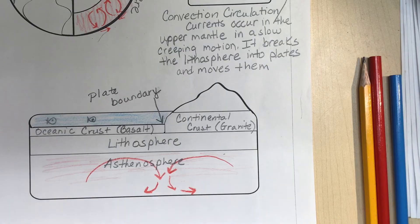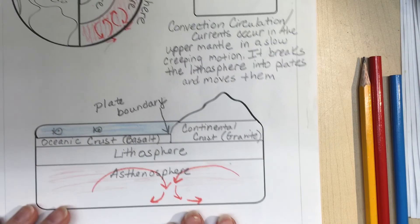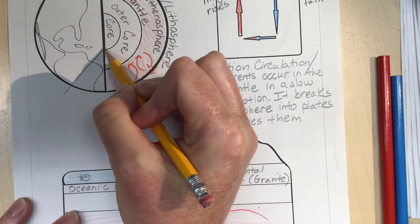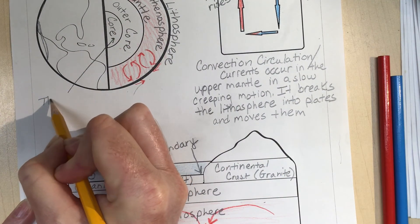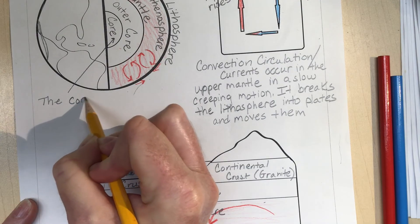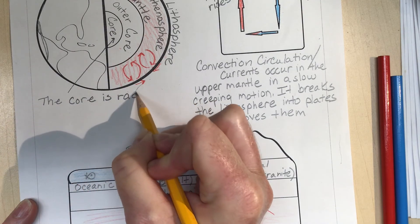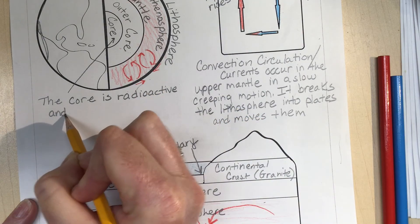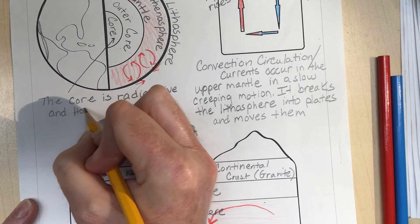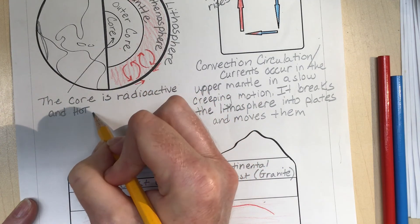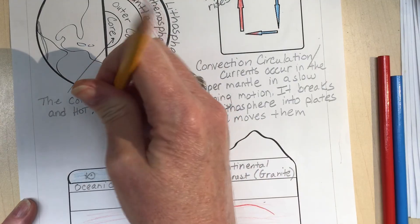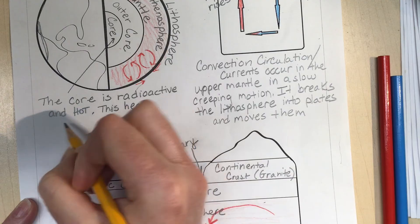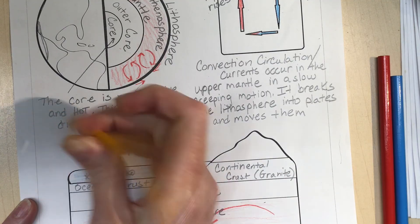I have one last thing to add here. Let's talk about the core. The core is radioactive and hot, and this heat from the radioactive core drives convection.